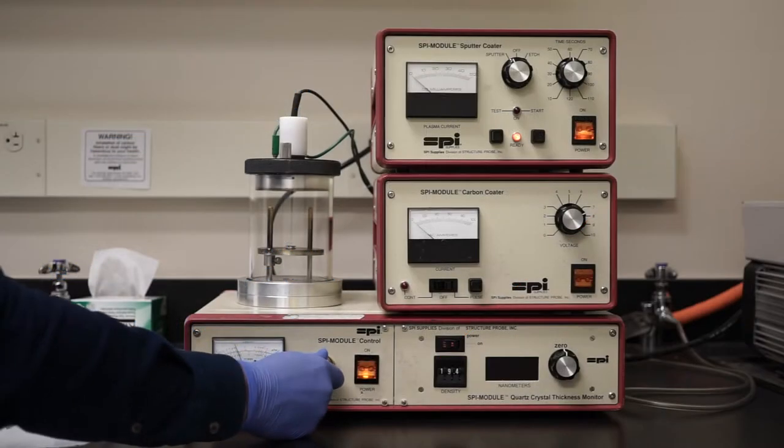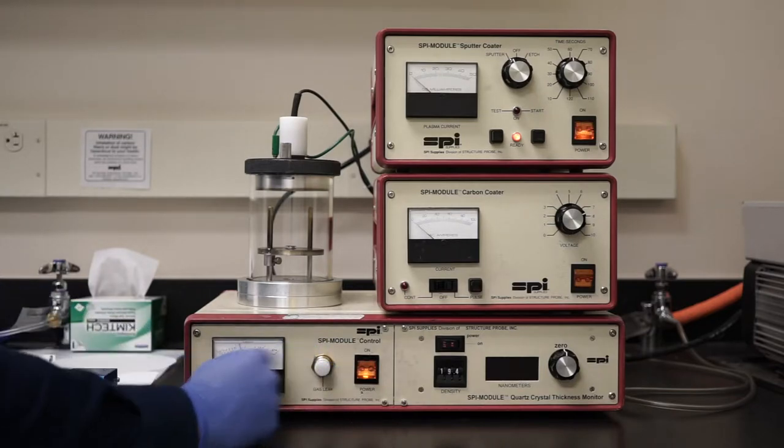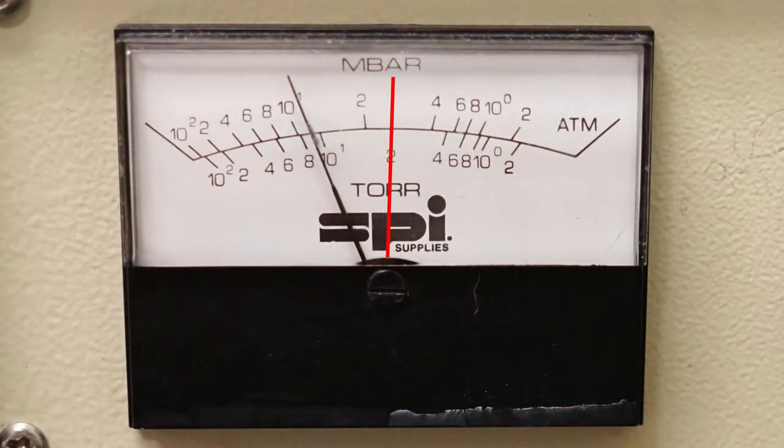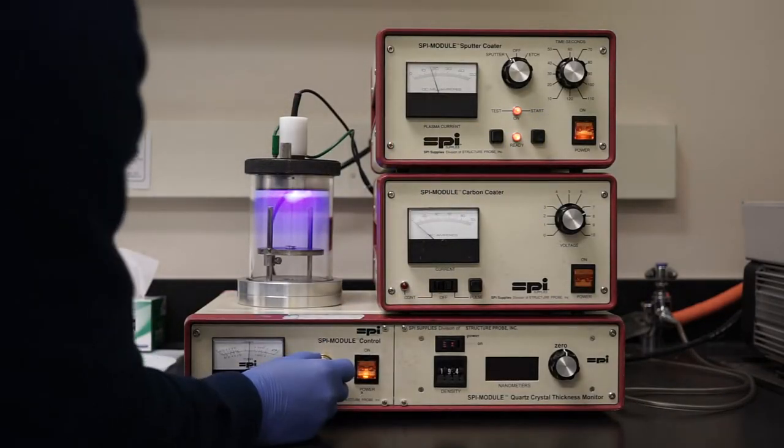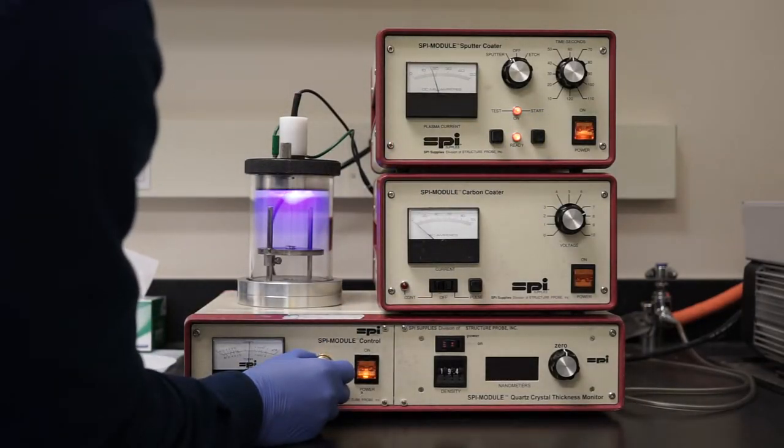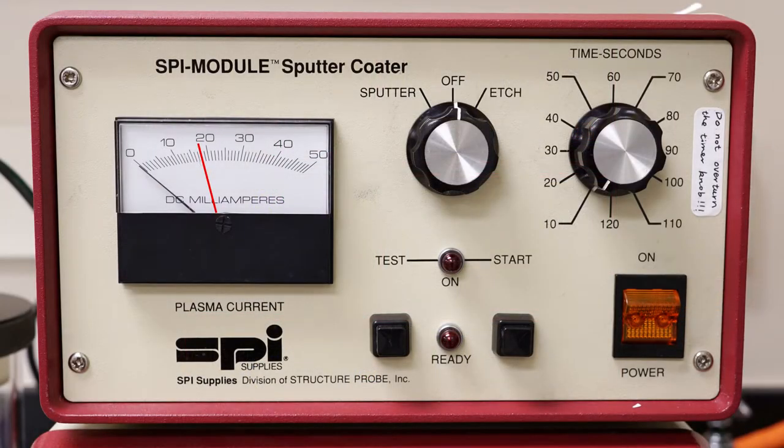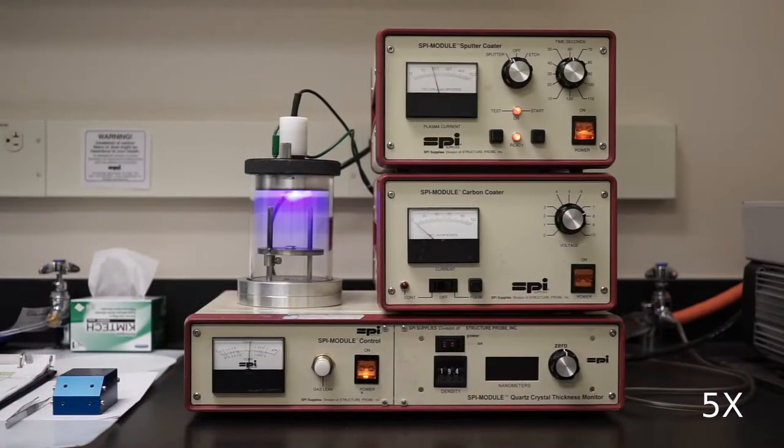After you set the sputtering time, slowly open the gas leak valve so that the pressure indicator hovers around 200 millitorr. Click start to begin sputter coating. You can adjust the leak valve if necessary to stabilize the current at 18 milliamps. You should see purple plasma inside the glass while the sample is being coated. The machine will stop after the set time has elapsed.